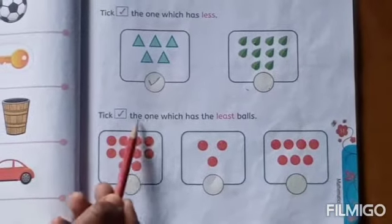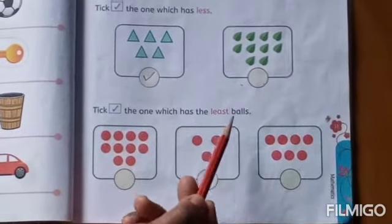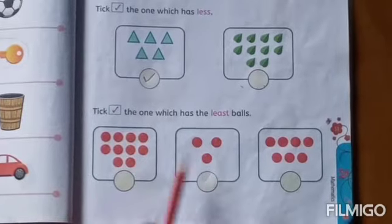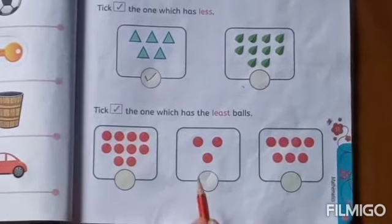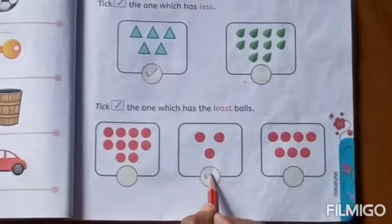Next one, tick the one which has the least balls. Look children, which is less? Yes, this picture is less. Ok?